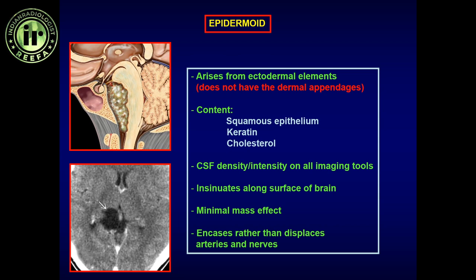Of these primitive cell origin neoplasms, we are going to briefly discuss epidermoid, dermoid, and teratoma. The first one is epidermoid. This is more frequently encountered than the other neoplasms, essentially because of ectodermal inclusion during neural tube closure. In its congenital form, during neural tube closure, ectodermal tissue gets trapped inside the intracranial portion.